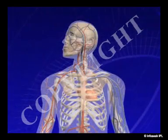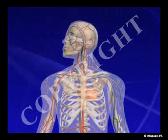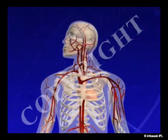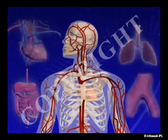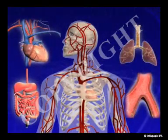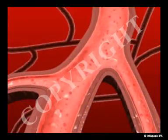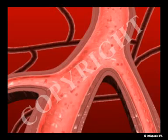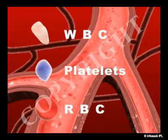Blood is a fluid medium which is circulated throughout the body. It contains and carries various useful as well as waste products to different parts of the body. It transports a range of cells like white blood cells, platelets and red blood cells.